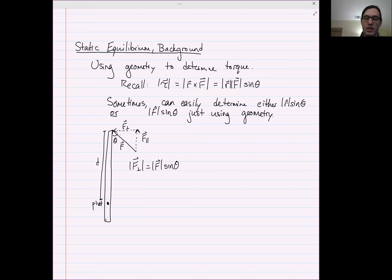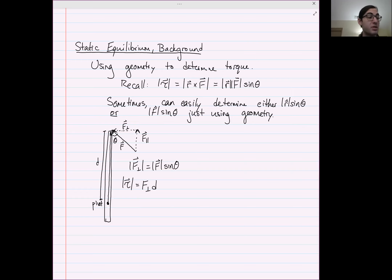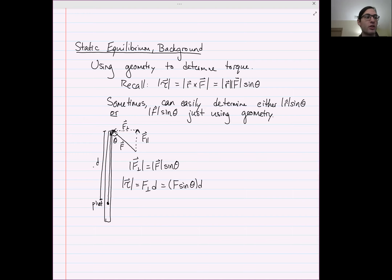Keep in mind that this angle is effectively the angle between the vector pointing from the pivot to where the force is applied and the direction of the force itself. So that theta is the theta we expect. In this case, the magnitude of the torque is just F-perp times D, which equals F sine theta times D. Where this distance is known, it's relatively straightforward to find F-perp using a little bit of trig.